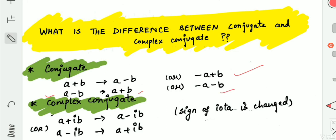Talking about complex conjugate, the complex conjugate of a+iota b will be a-iota b, and in a similar way, the complex conjugate of a-iota b will be a+iota b. Complex conjugate is for imaginary numbers, and the sign of the iota gets changed.